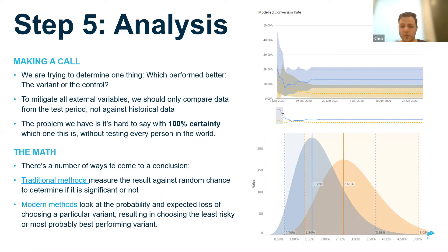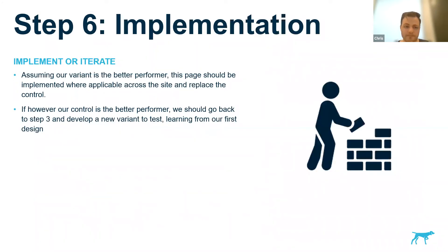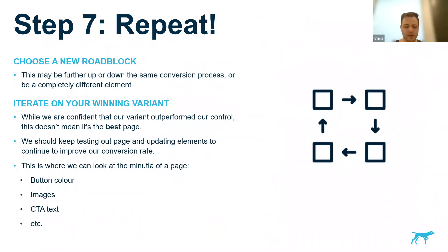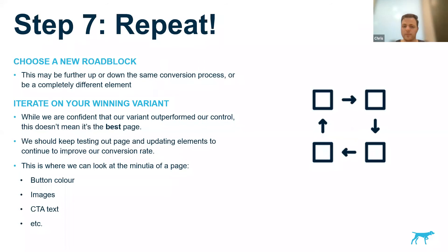Once we've made this analysis and decided which page is the better performer, we implement it. And then we repeat. The power of CRO is you're not saying that variant one is the best page you could have ever designed — maybe that doesn't exist. As long as you're improving, you can go back to the drawing board, keep iterating, and make smaller and smaller improvements so the page just gets better and better. You can either keep working on the same page, or look elsewhere on the site — like working through the e-commerce funnel step by step, addressing where people are dropping off next.